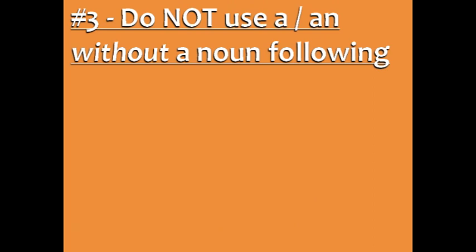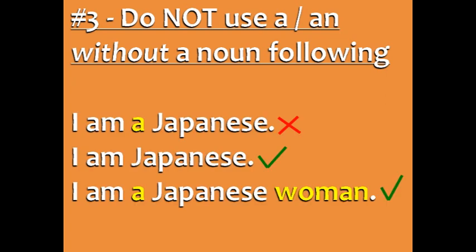Number three: do not use a or an without a noun following it. For example, you can't say 'I am a Japanese' because 'Japanese' is an adjective and there is no noun in the sentence. Instead, you could say 'I am Japanese' or 'I am a Japanese woman.' It's okay to use 'a' because there's a noun, 'woman,' after the adjective 'Japanese.'